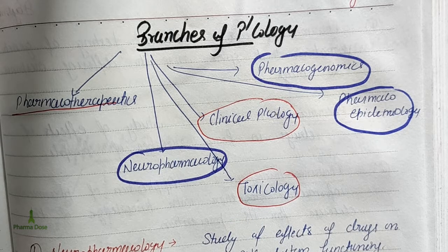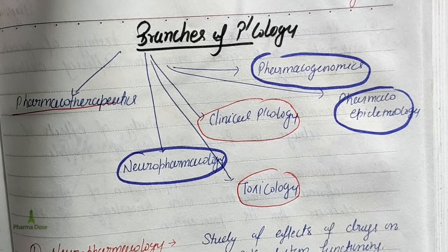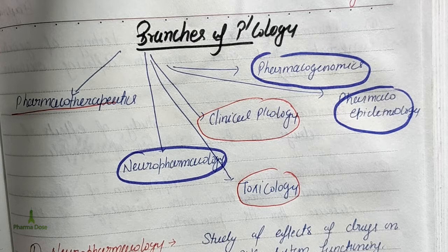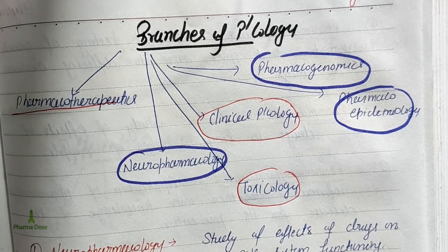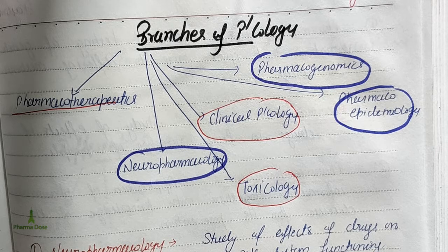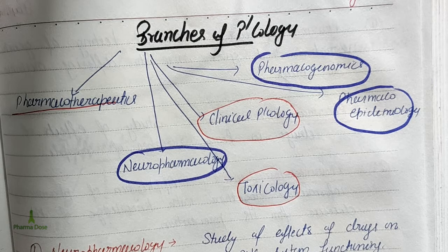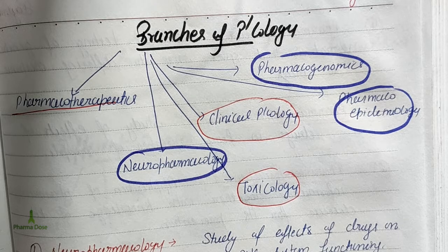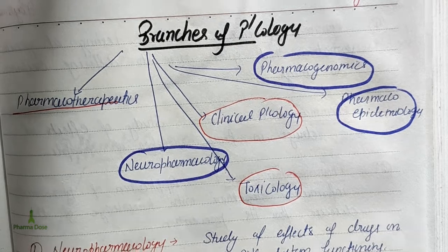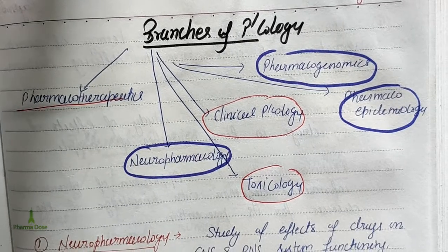In this lecture we will discuss the various branches of Pharmacology. In Pharmacokinetics, we studied the ADME profile and the dynamic mechanism of drug action. A drug is a chemical constituent used for the diagnosis, prevention, and treatment of diseases and disorders.